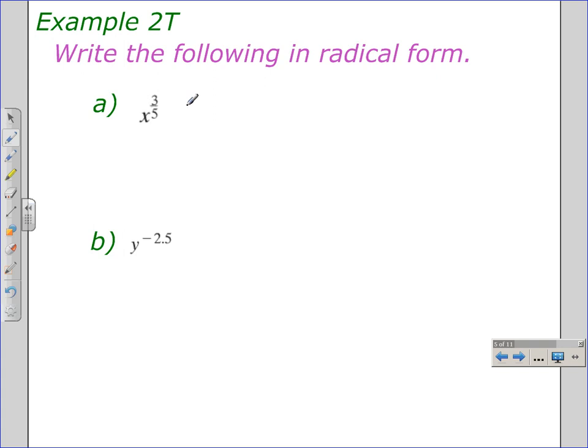Simply writing these in radical form, pretty easy process to do. You know you're going to have the x in a radical. The denominator indicates the index and the numerator indicates the power. We could also write that as the 5th root of x and then evaluate it to the 3rd. So we could write it either one of these ways.